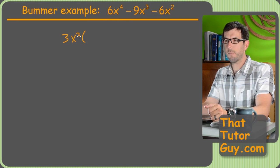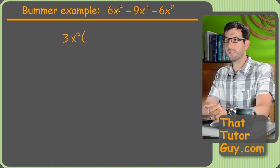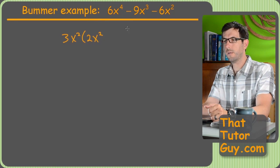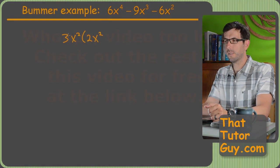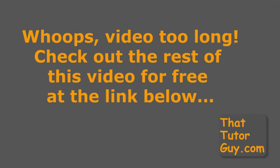3x squared to 9x squared. So 3 to 9 is negative 3. 3 to 9 is negative 3.